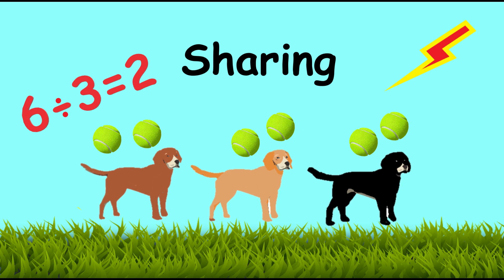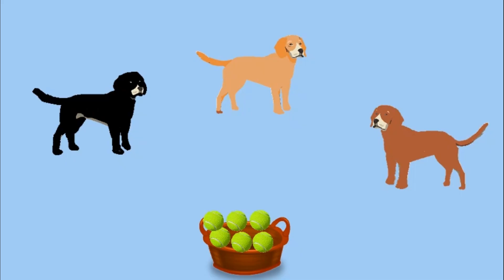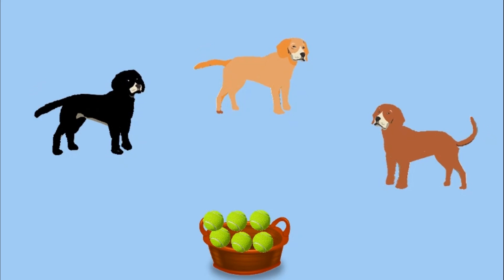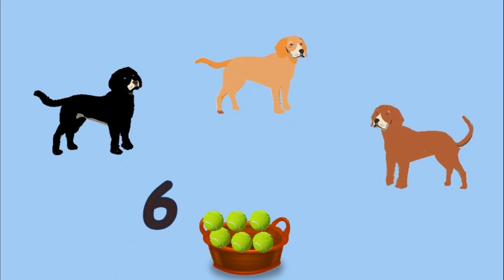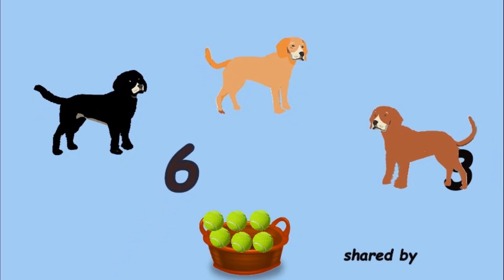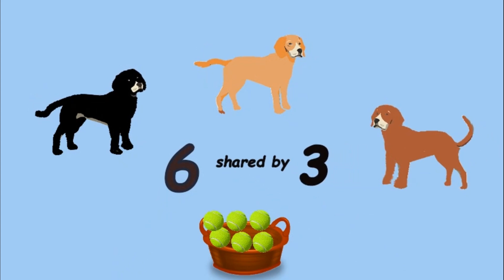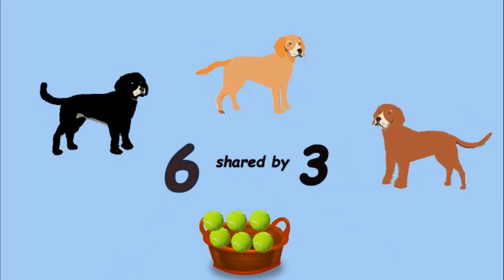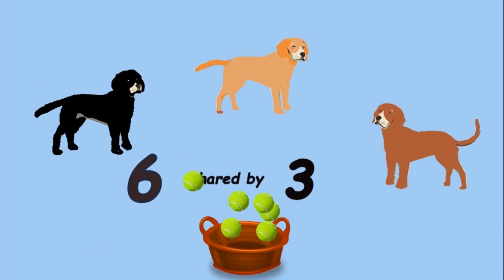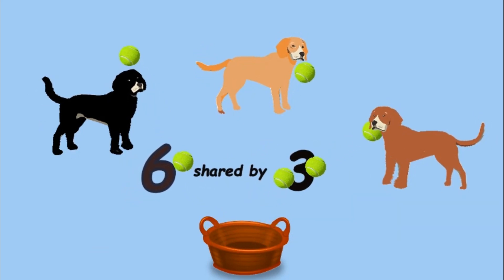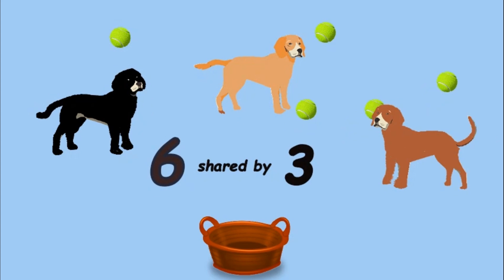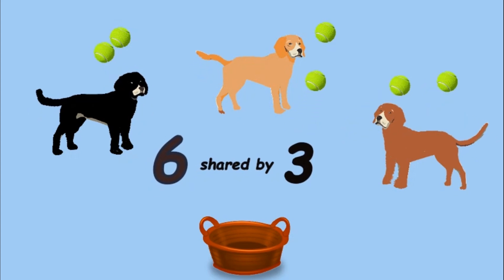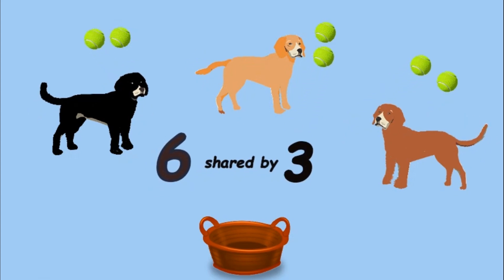All about sharing. There are three dogs and six balls. Let's share the balls so each dog can have the same amount. Each dog has two balls, so six shared by three equals two.